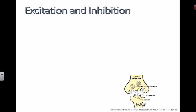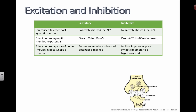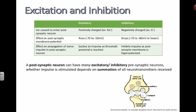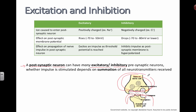That was explained in a previous video. So here are some details about the difference between excitation and inhibition. A post-synaptic neuron — in other words, a neuron that's at the end — this is the beginning of a post-synaptic neuron. Here's the pre-synaptic neuron. So a post-synaptic neuron can have many excitatory or inhibitory pre-synaptic neurons.